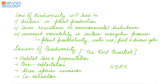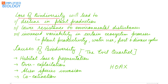Loss of biodiversity will lead to decline in plant production, decrease in biomass, and disruption of the food web. There will be lower resistance to environmental disturbances like drought and floods, increased variability in ecosystem processes like plant productivity, changes in water use and pest and disease cycles, and species will be more vulnerable to diseases and predation, with decreased efficiency and productivity.